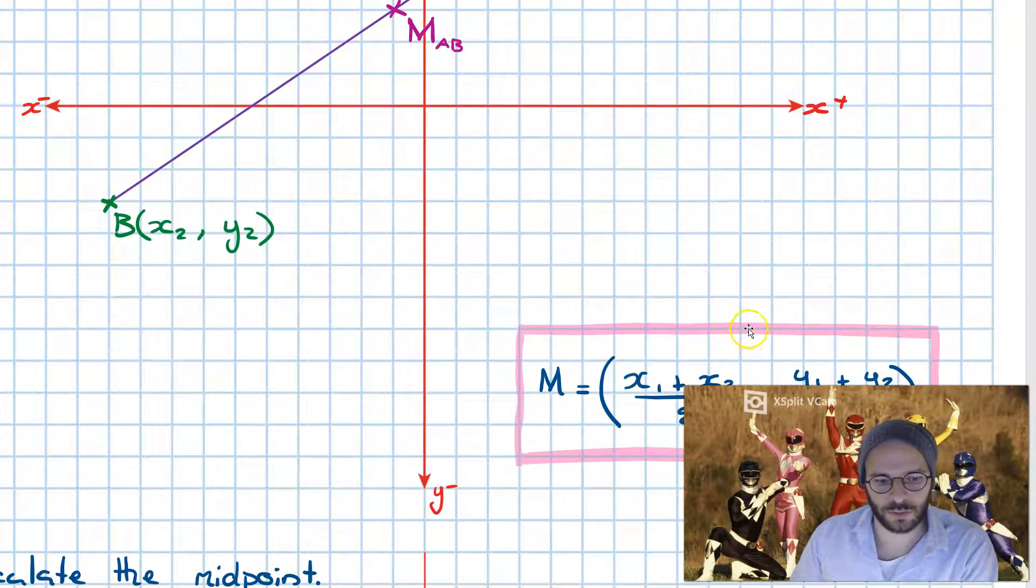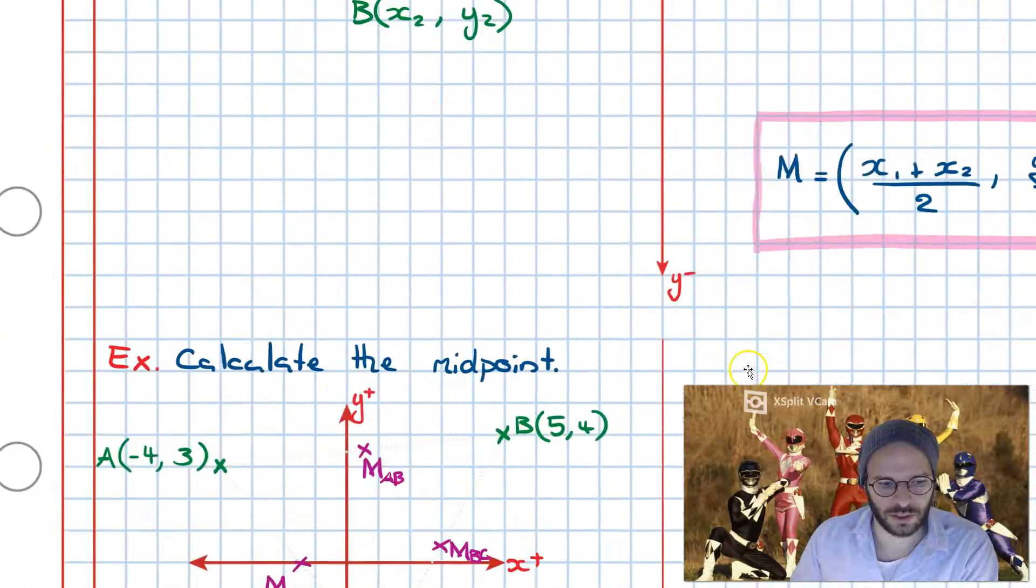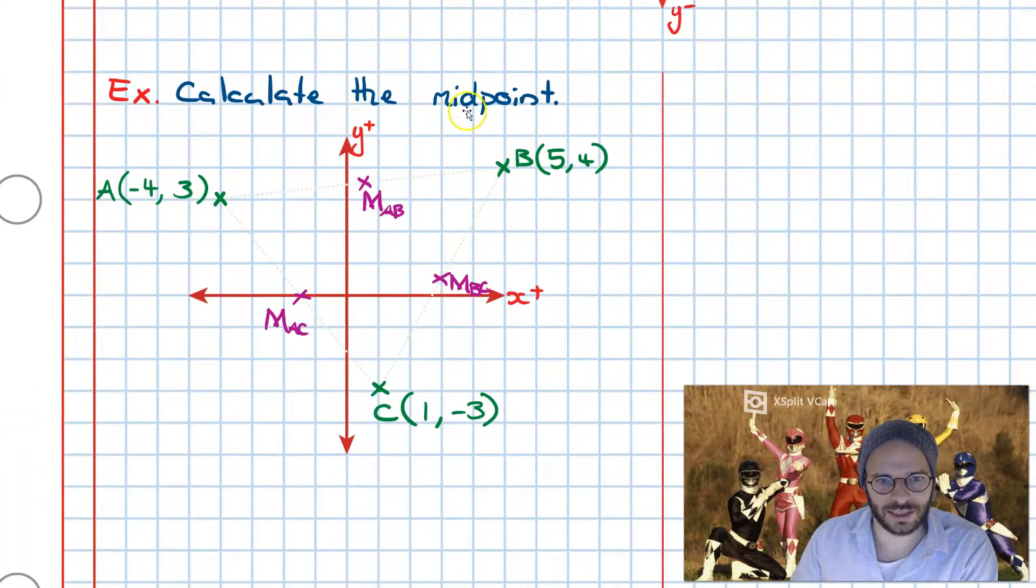Now applying the midpoint formula to a few examples, we go down, we have calculate the midpoint, so we have midpoint M_AB, M_AC, and M_BC, and we have coordinates A, B, and C on this Cartesian plane as such.